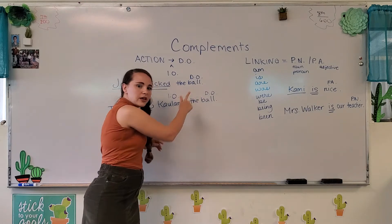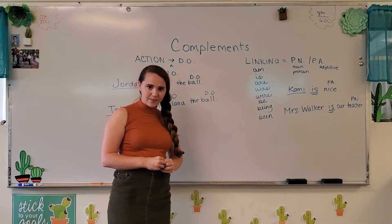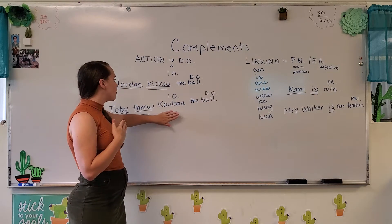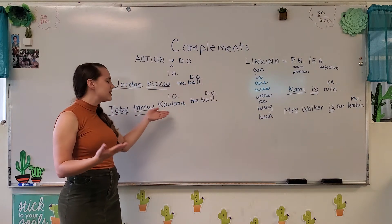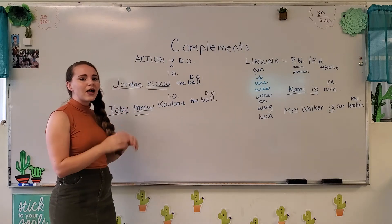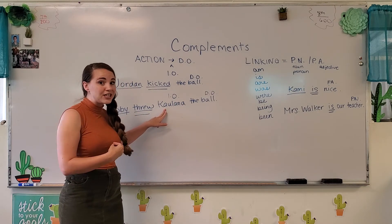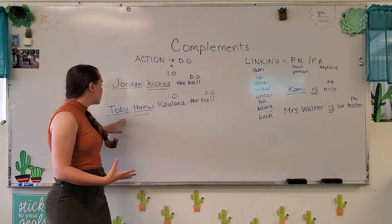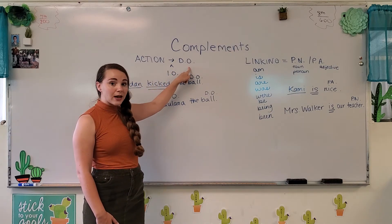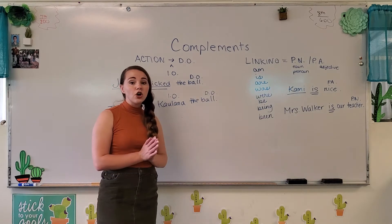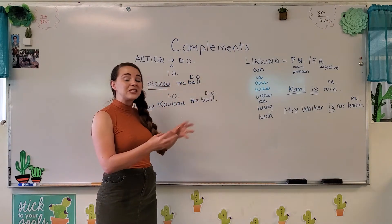Jordan kicked the ball. The ball is receiving the action — that's what he kicked. So that's why we call it a direct object, because it's an object that received the action. Now, Toby threw Kalana the ball. He didn't throw Kalana — Toby didn't pick up Kalana and throw him. So Kalana cannot be the direct object because that's not what he threw. He threw the ball, but to Kalana. Eventually Kalana received that — indirectly. So Toby threw the ball, but it was to Kalana. An indirect object always comes right in between the verb and the direct object. So when you are doing your worksheet, think: what kind of complements does an action verb get? These are the objects — they're receiving action.